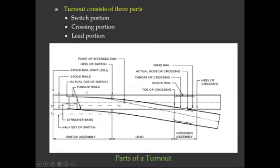This is called the tongue rail. The stock rail is fixed and not movable, but the tongue rail is movable. It is fixed at one point called the heel of switch, and with respect to that point the tongue rail takes its movement. The two tongue rails are interconnected with the help of stretcher bars — a leading stretcher bar and following ones. The stock rail is fixed while the two tongue rails are movable with respect to the heel of switch and connected together by stretcher bars.